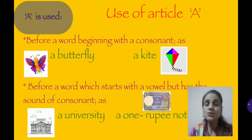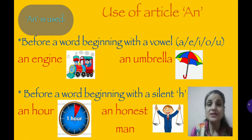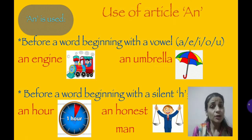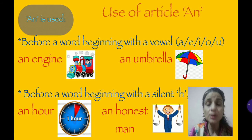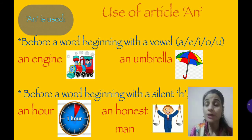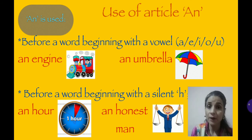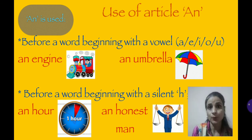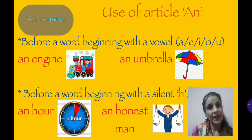Next, we learn the use of article 'an'. The basic rule: 'an' is used before a word which starts with a vowel. There are five vowels: A, E, I, O, U. So, for example, an example, an engine, an umbrella.